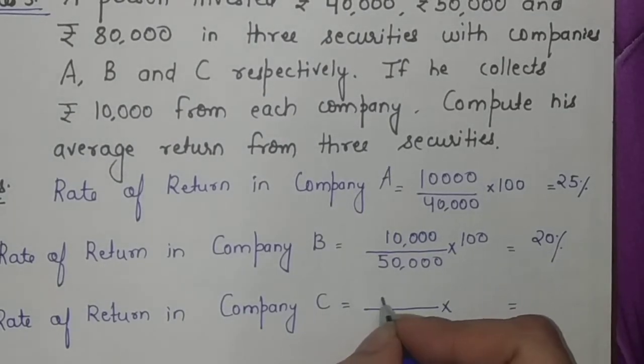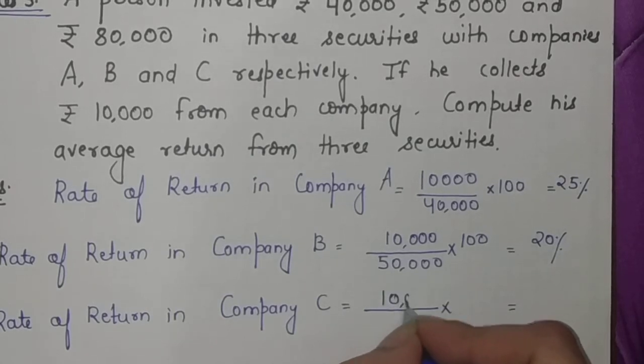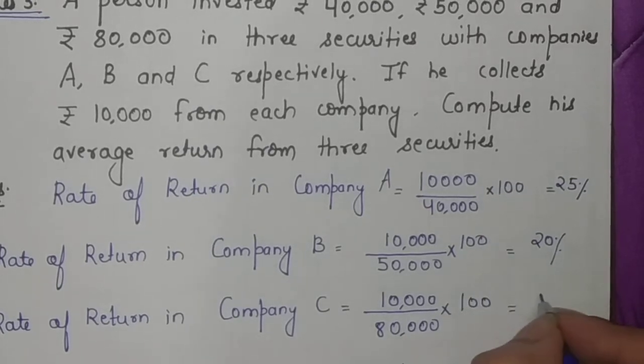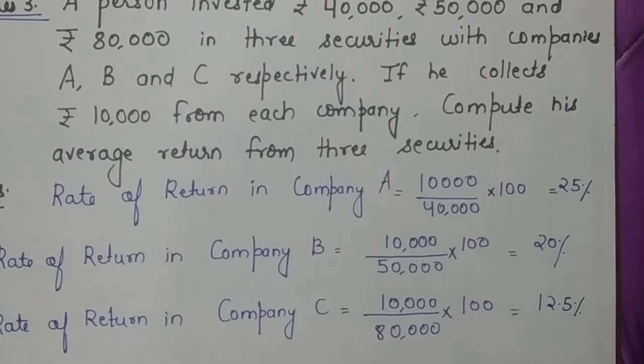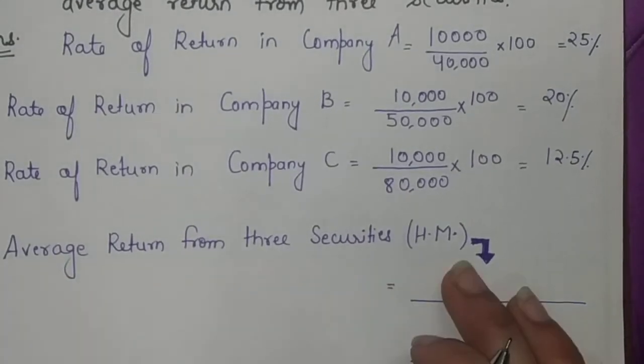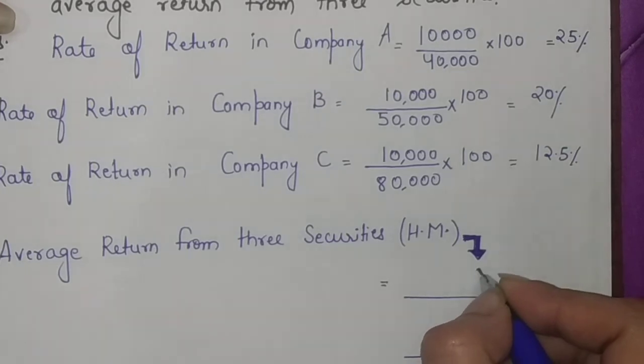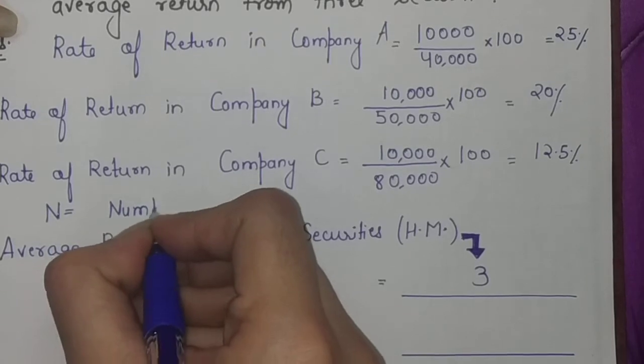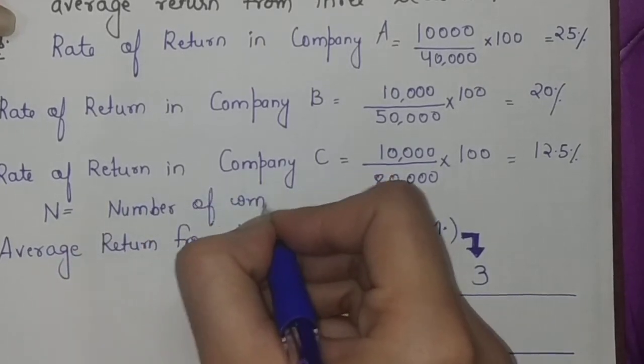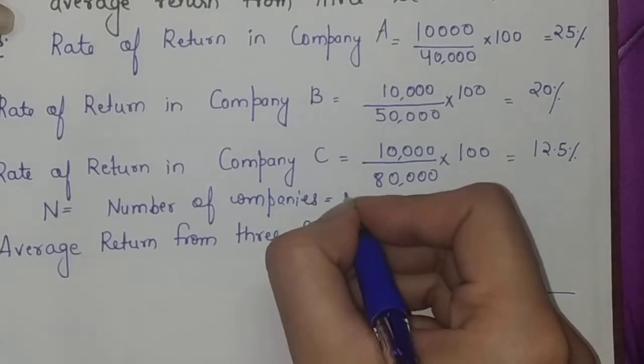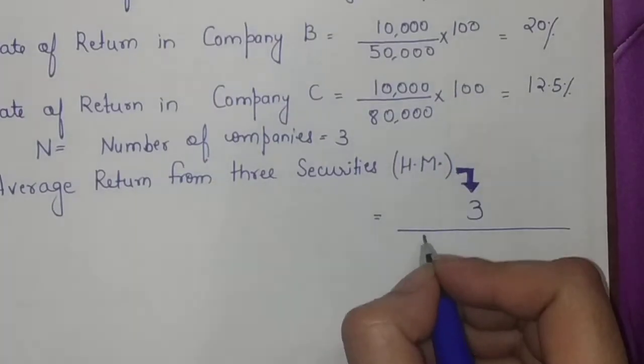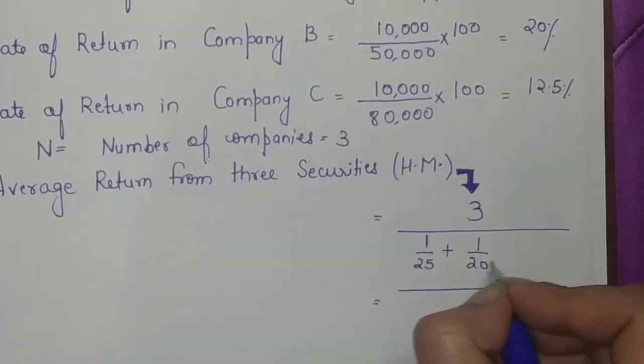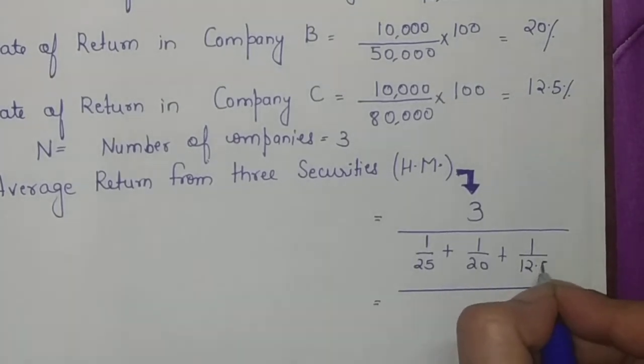In the third company, his return was again 10,000 rupees and he invested 80,000, so his rate of return was 12.5 percent. Average return from all three securities can be derived as n is 3, which is the number of companies. So 3 will go in the numerator and in the denominator you will take reciprocal of the numbers: 1 by 25 for company A, 1 by 20 for company B, and 1 by 12.5 for company C.